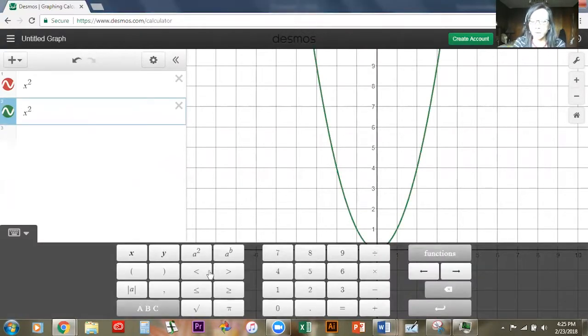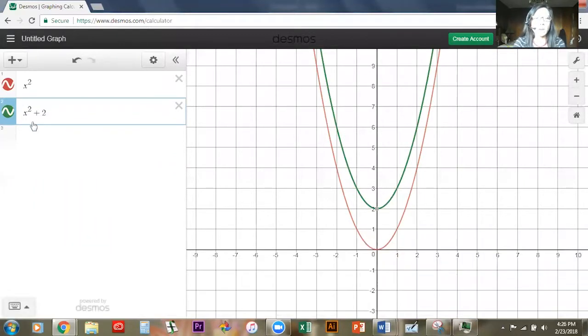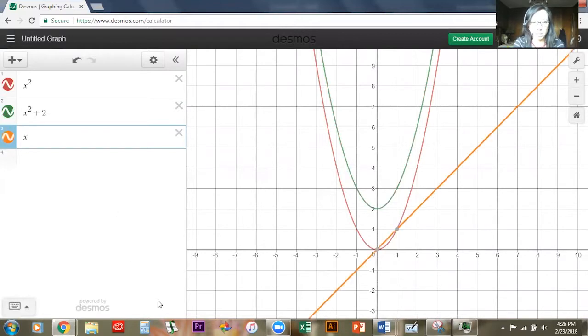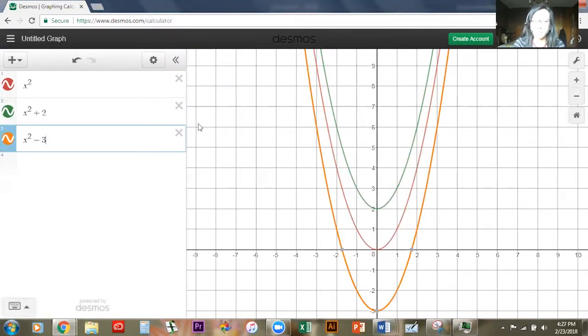So now I want to take a look at this graph with a vertical shift. So now we have x squared plus two being the green graph, and what we can see is it literally shifted our graph up two. If we were to add another graph, x squared minus three, it should be no surprise that that new graph which is yellow here has been shifted down three.